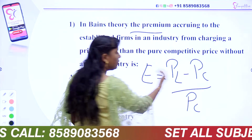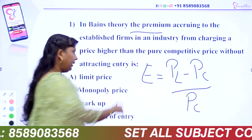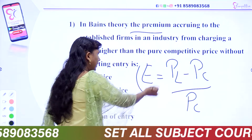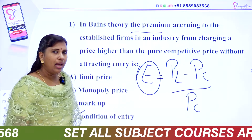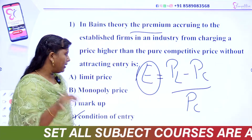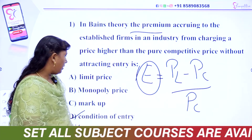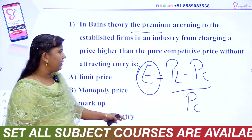E is equal to PL minus PC divided by PC. That is the formula for entry preventing price. What is the price for entry preventing?